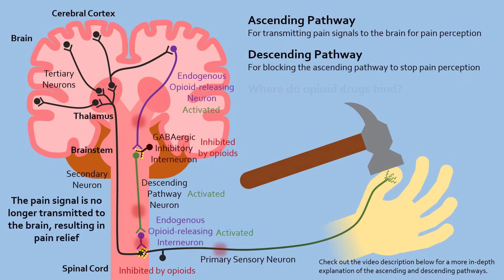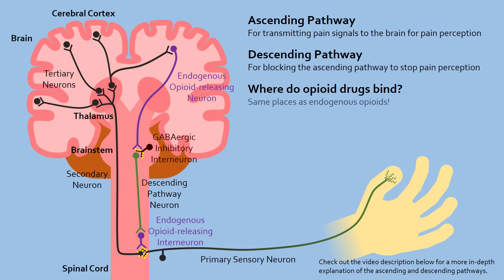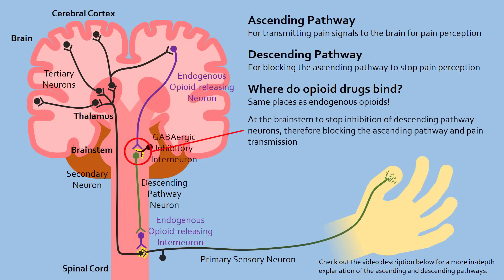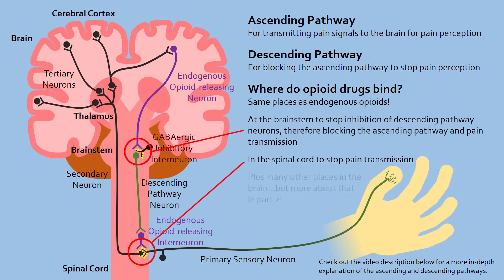So when we administer opioid drugs to people, they will act the same way as our endogenous opioids and result in pain relief. Opioid drugs will bind to receptors on the inhibitory interneurons in the brainstem, which stops inhibition of descending pathway neurons, which stops the ascending pathway and pain signal transmission. They will also stop pain signal transmission by binding to receptors in the spinal cord. Finally, they can bind to other areas in the brain such as the ventral tegmental area to cause addiction, or the respiratory center to stop breathing.